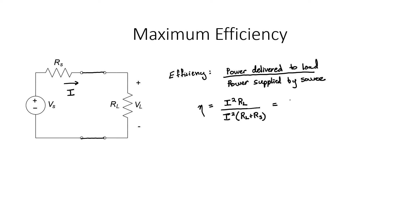The current cancels from this equation and we're left with a ratio of R L divided by R L plus R S. I don't have to take a derivative in this particular problem because the value of the load resistor that maximizes the efficiency is obvious.